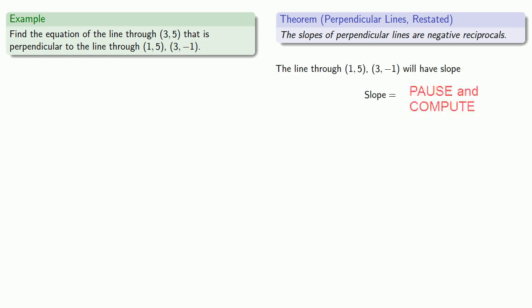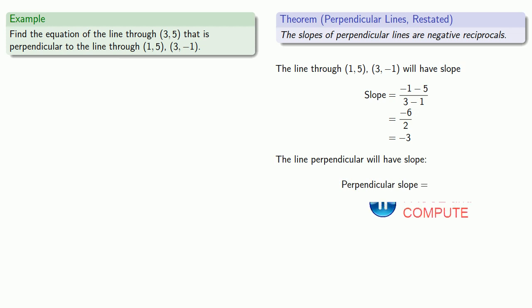So we'll calculate that. The slope is (-1 - 5)/(3 - 1) = -6/2 = -3. The line perpendicular will have a slope that is the negative reciprocal. So that perpendicular slope will be 1/3.